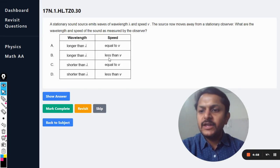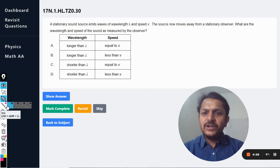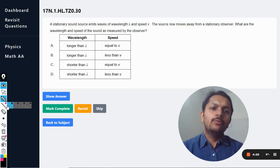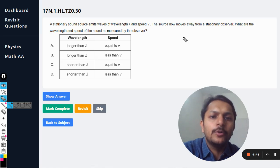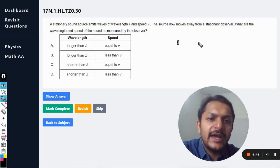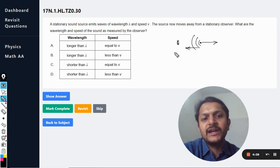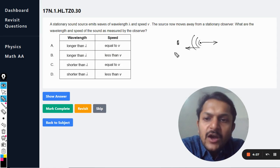Okay dear students, let's see what is in this question. A stationary sound source emits waves of wavelength lambda and speed v. The source now moves away from the stationary observer. So this is the observer, and the source is moving away, but the sound is going in the backward direction towards the observer. What are the...